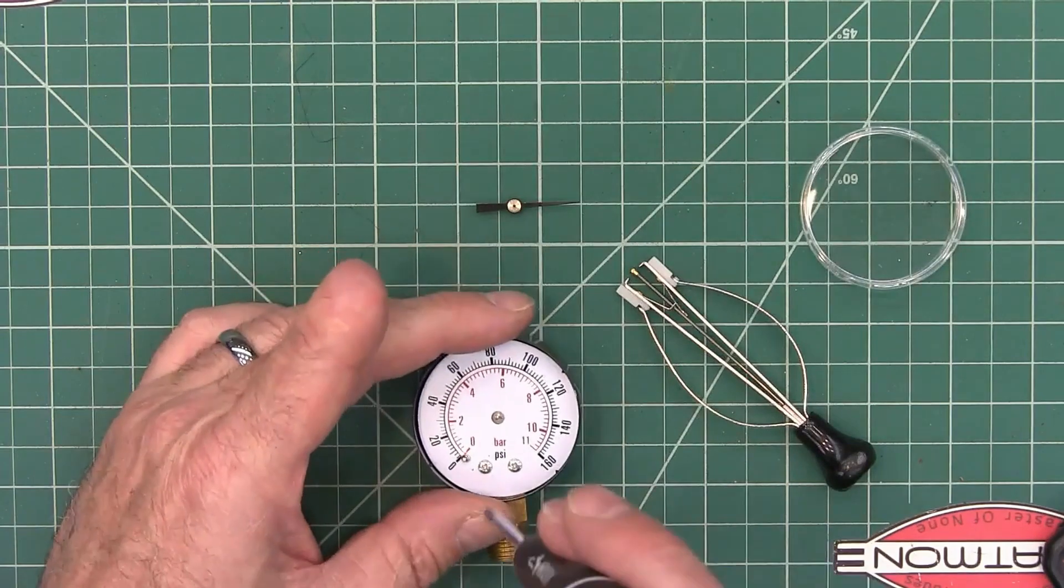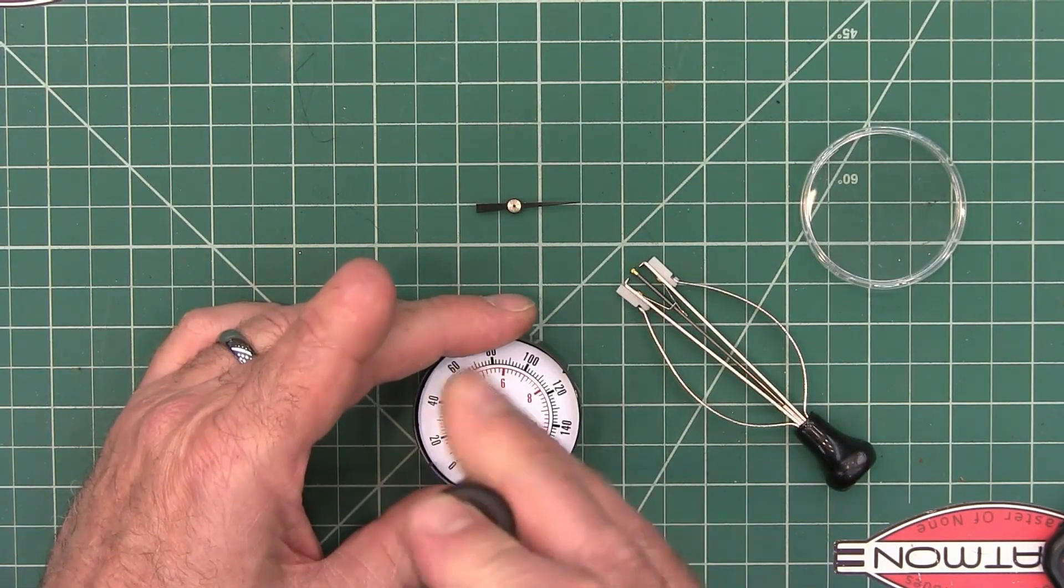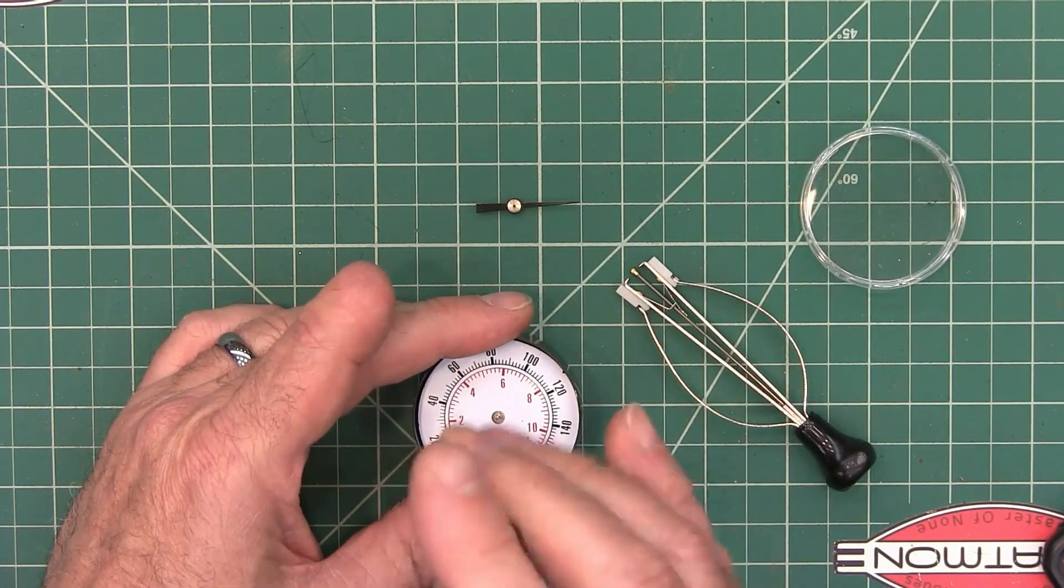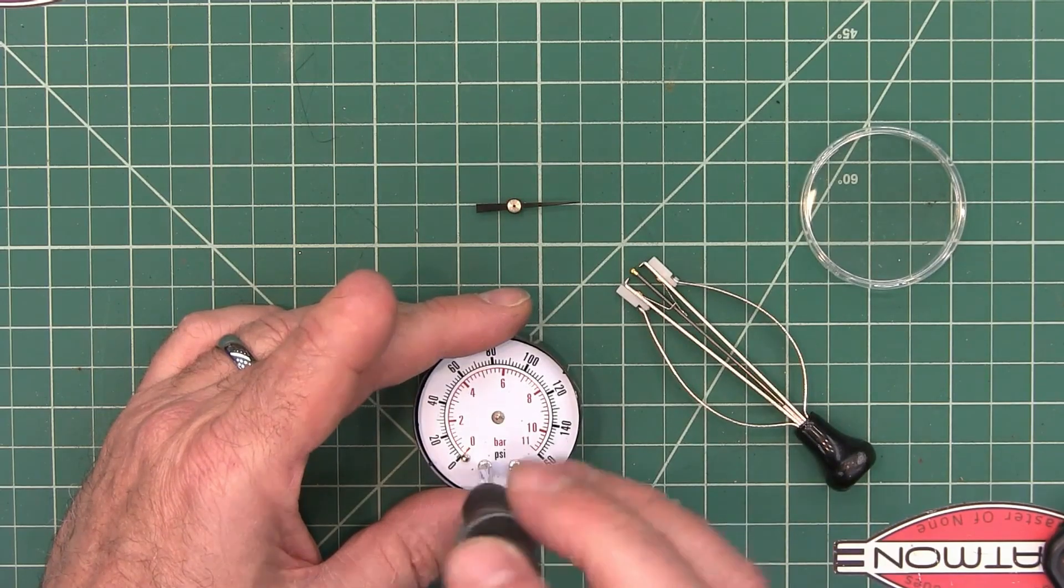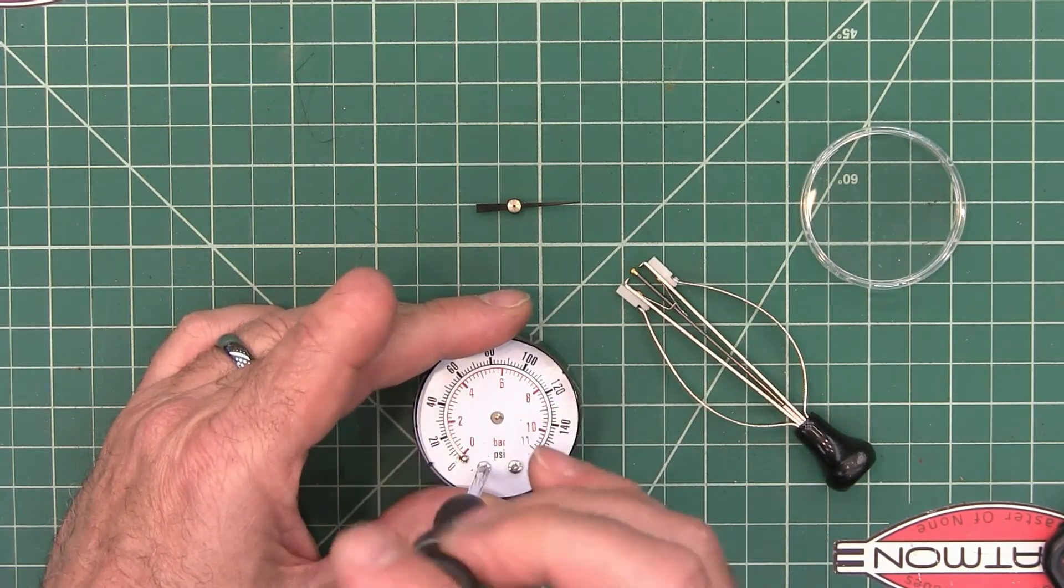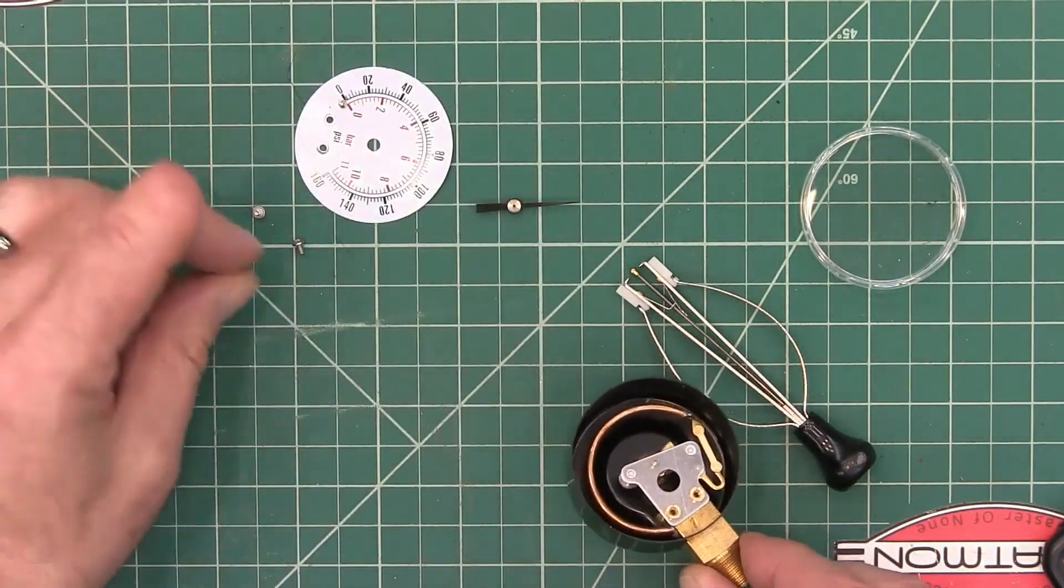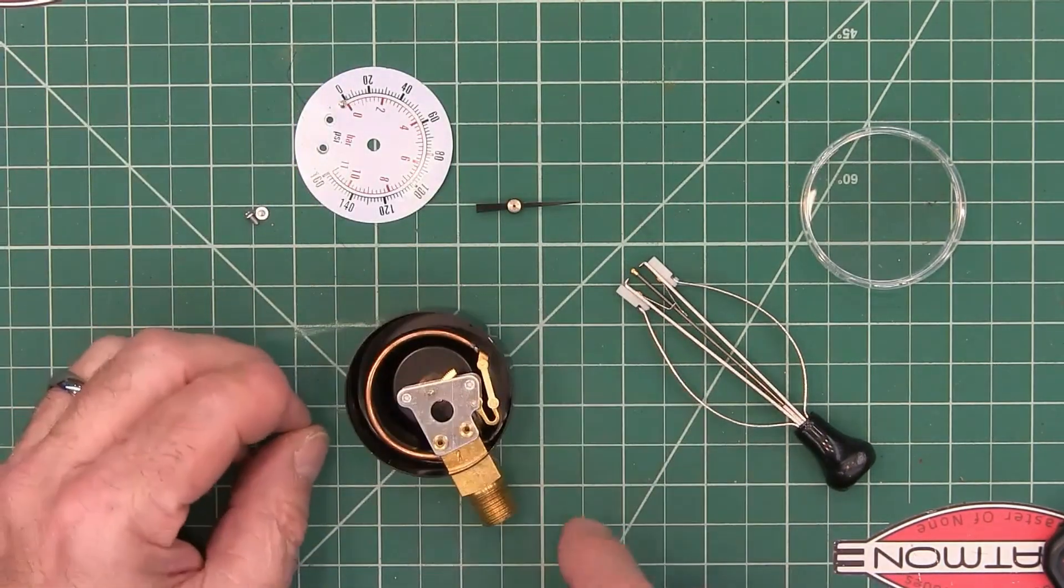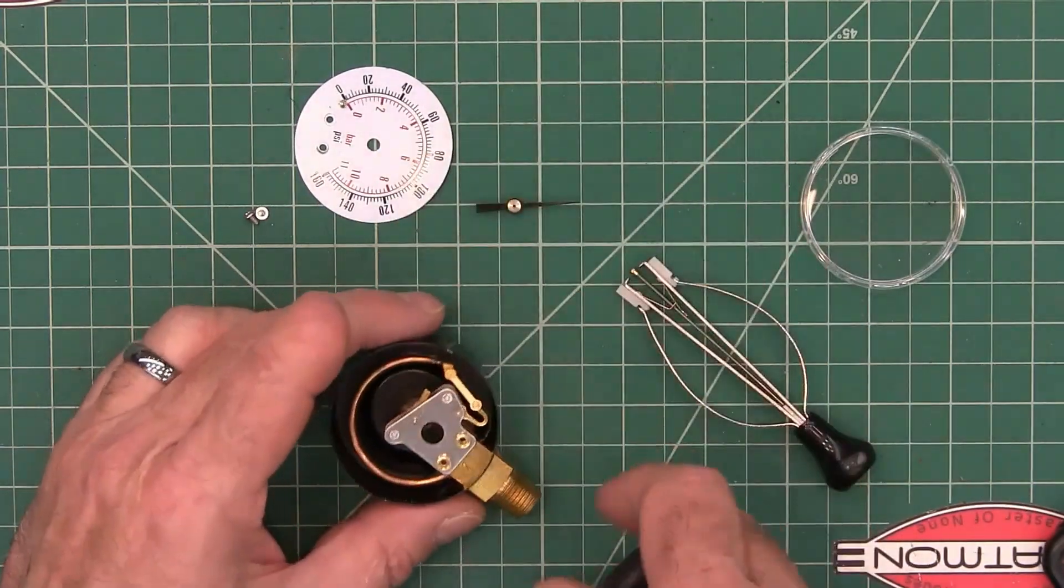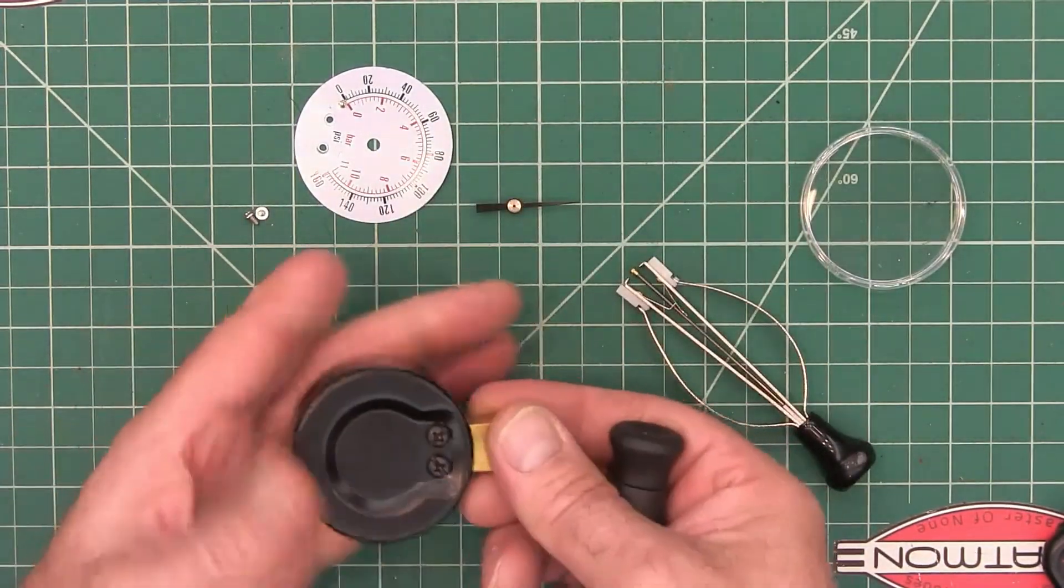And then to remove this part, I'm just going to take these two screws out. I want to keep those little screws. So this part we're not going to use anymore. We got to get this off.